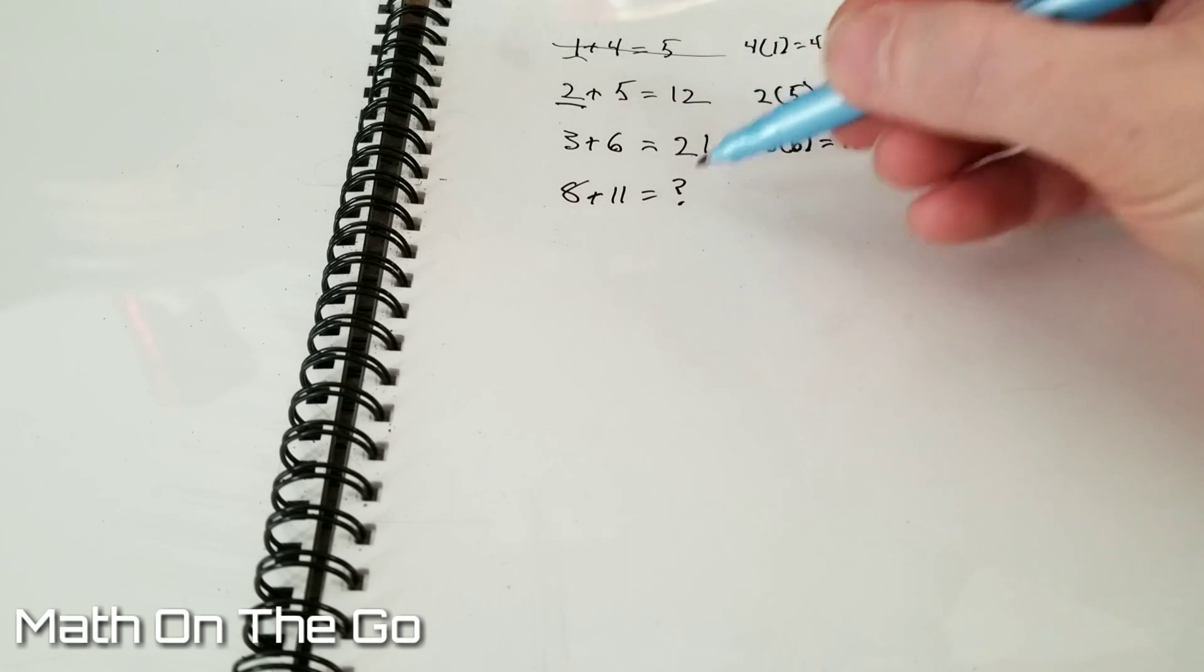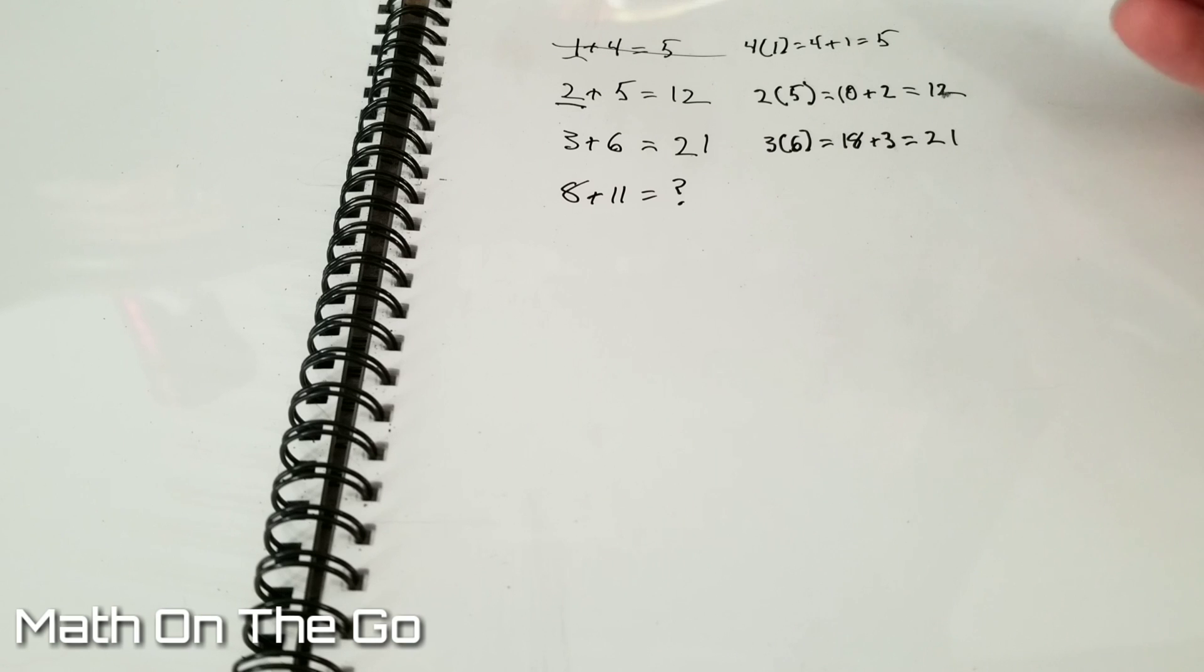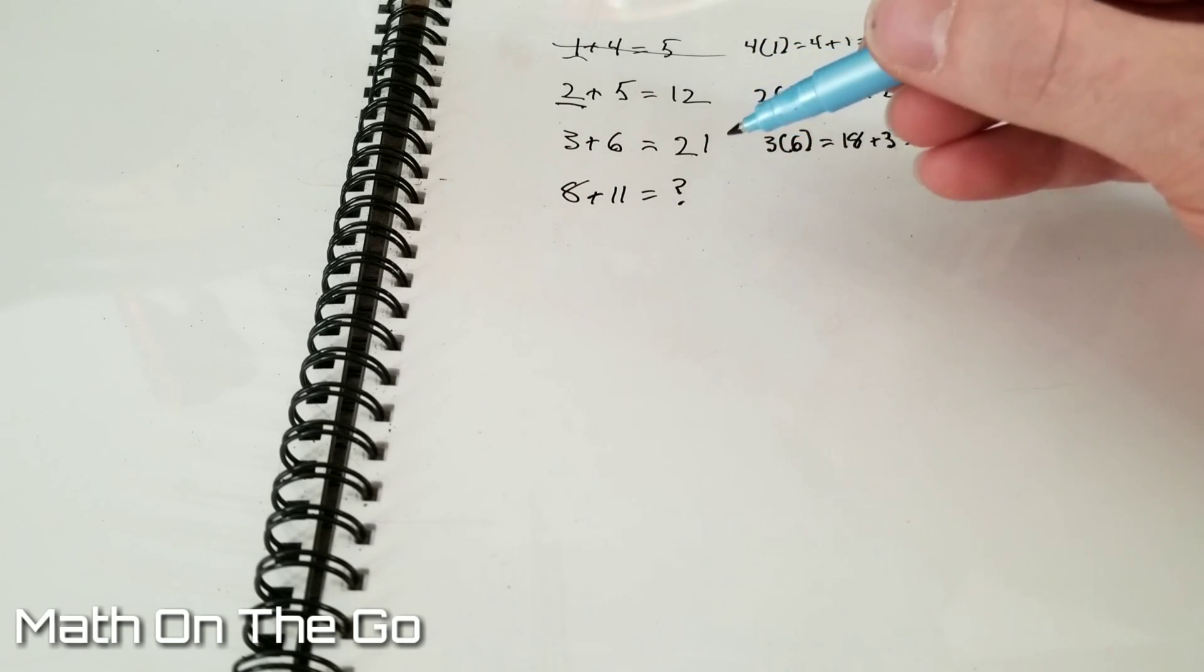And then for this one, this is the one we must figure out. The trick to this is we've got to figure out the pattern for the first three, or at least one of them, but show that it works for all three of them. So then you can apply that knowledge to the last one to figure out what this one should be.